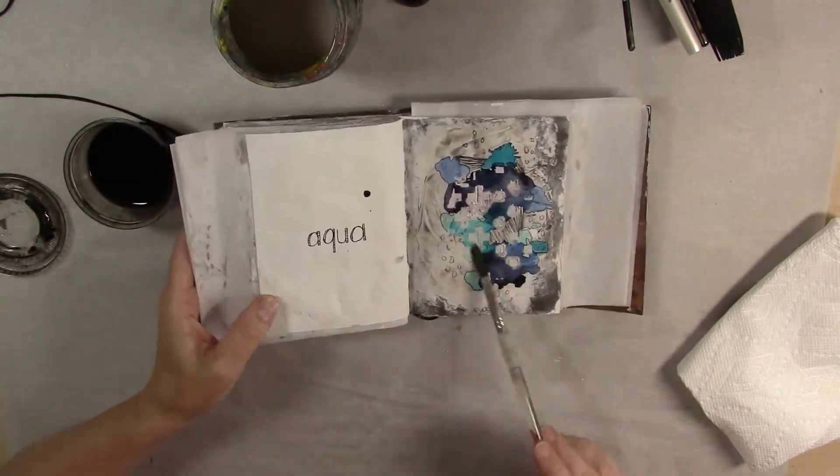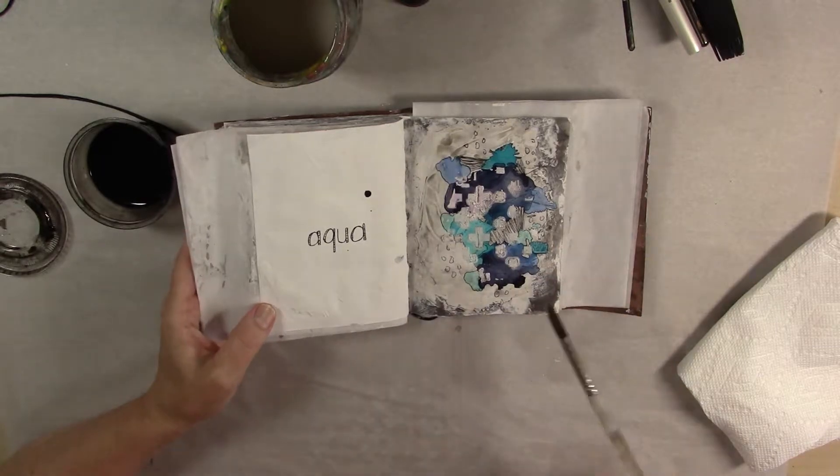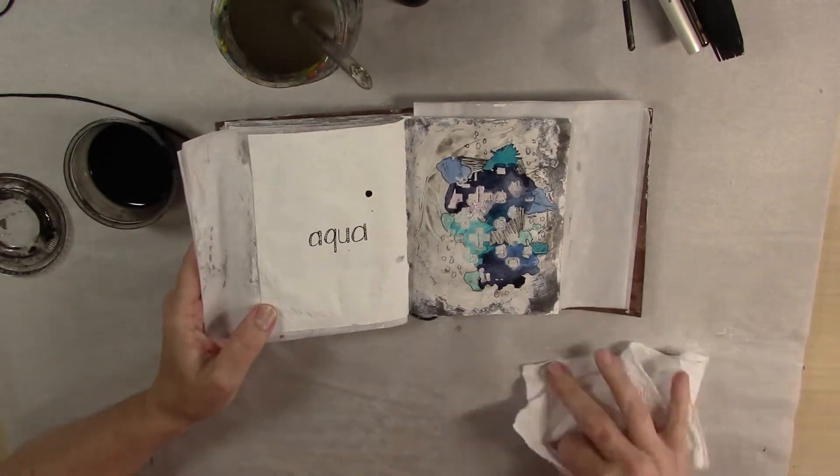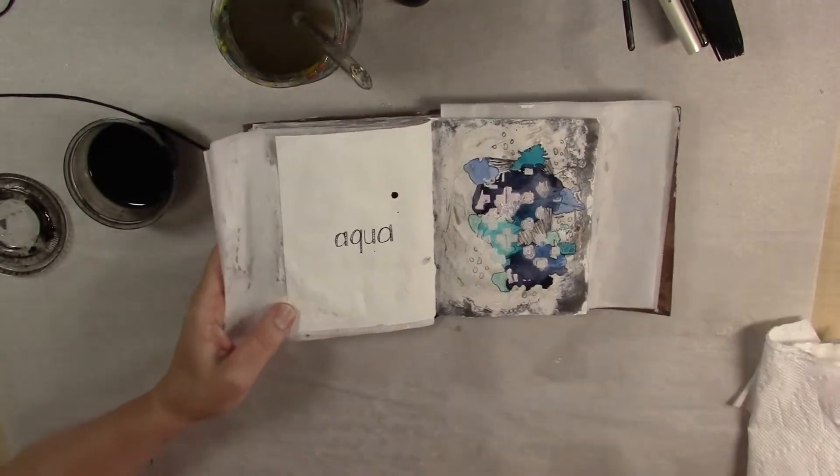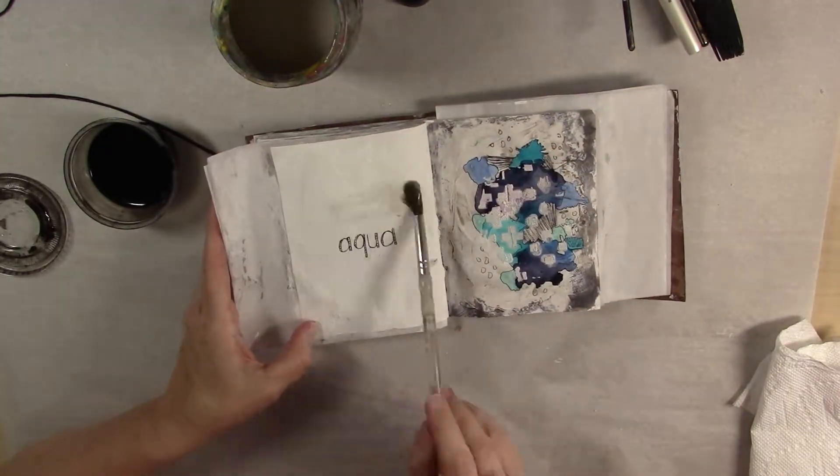So I just put it on here. Make sure it gets in all of these cracks that are on here. Dab off any excess where I don't want it on the page. And then that side is done. Then I do the same over here.